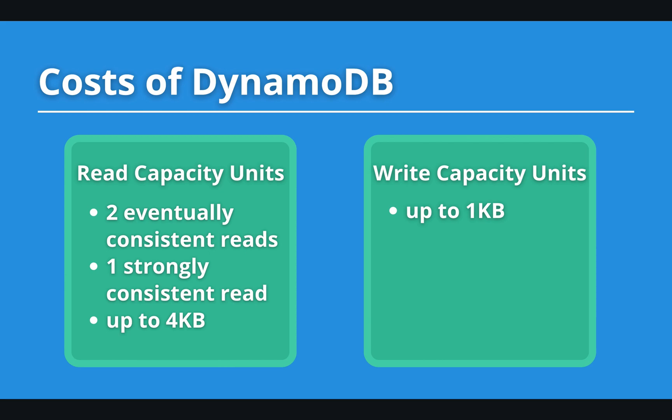For writes, one write capacity unit equals 1 KB. If your item is larger, you will be charged for more write capacity units. Keep in mind that you will be charged for the read and write capacity units your system consumes. Also, DynamoDB is better optimized for read-rich systems — if you have more writes than reads, DynamoDB might not be the best choice. For full details on DynamoDB pricing, please check the documentation.